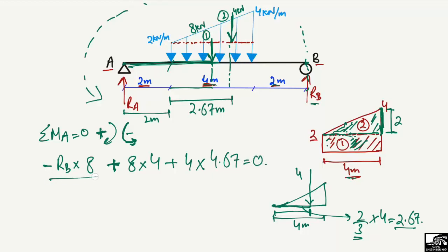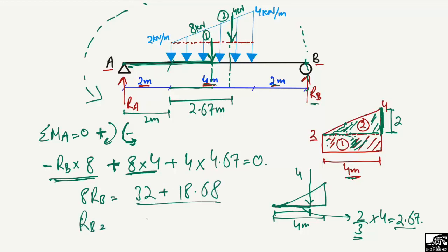Setting the moment equation equal to zero and shifting terms: 8 × RB = 32 + 18.68. Dividing both sides by 8, we get RB = 6.33 kN. So the reaction at support B is 6.33 kN. Now we need to find the reaction at point A.